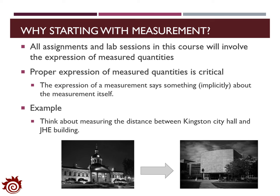Before we dive into more topics in surveying, we have to ask: why do we start with measurement in surveying? For all assignments and lab sessions in this class, we have to find appropriate expressions of measured quantities. Finding the appropriate expression of a measured quantity is the only way to deliver meaningful results to an audience. For example, if we want to measure the distance between Kingston City Hall and the GHE Building, we need to choose the horizontal distance — and this measurement explains exactly what we want to communicate. That will be all for today's lecture. Thank you very much for your attention, and I will see you on Wednesday.